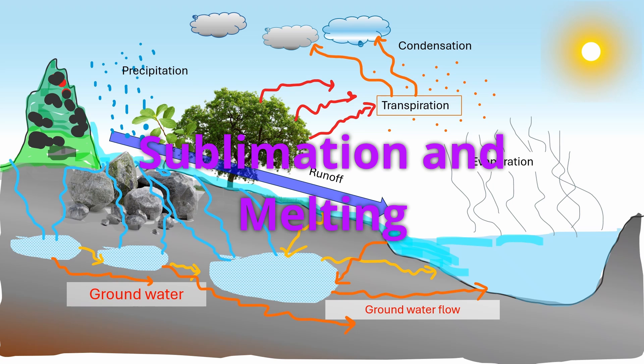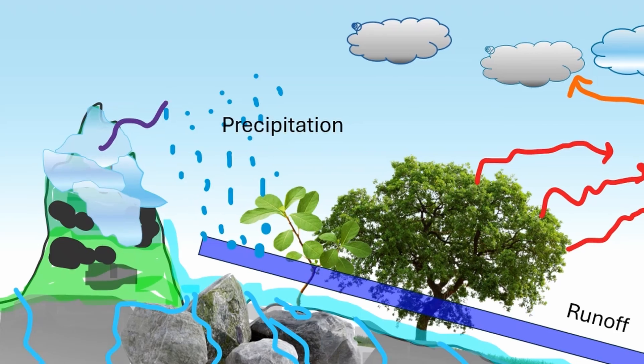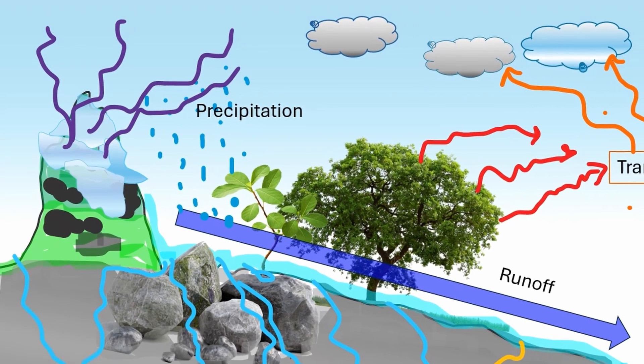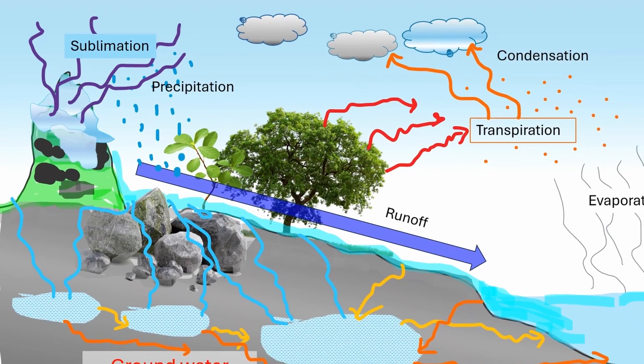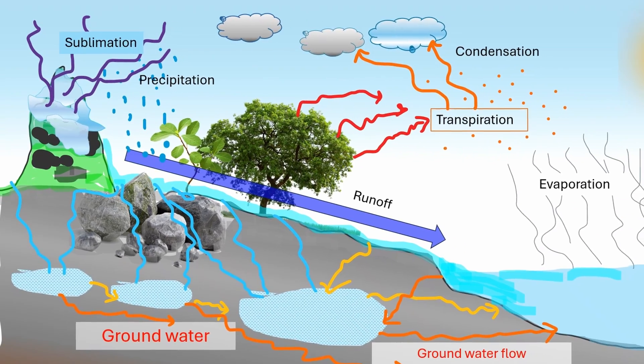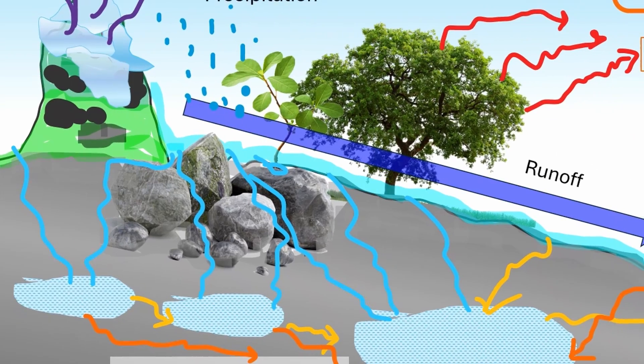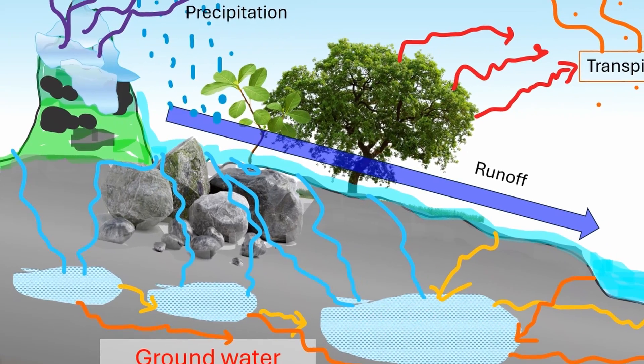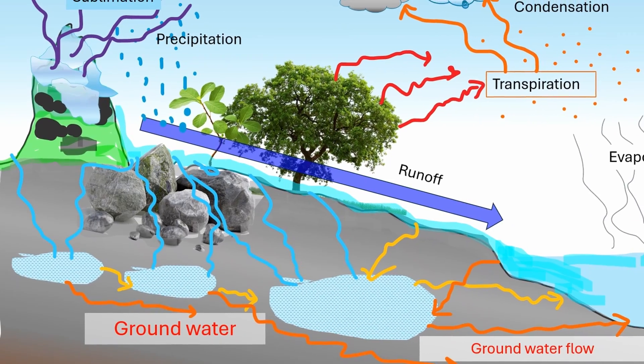Sublimation and melting: In some cases, water can transition directly between its solid and gaseous states without passing through the liquid phase. This process is called sublimation, which occurs when ice or snow turns into water vapor under specific conditions. On the other hand, when ice melts, it becomes liquid water, and this process is known as melting.